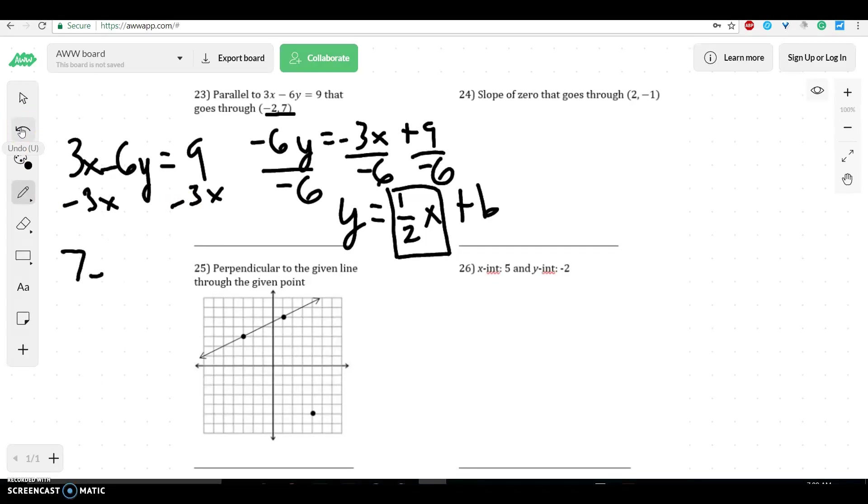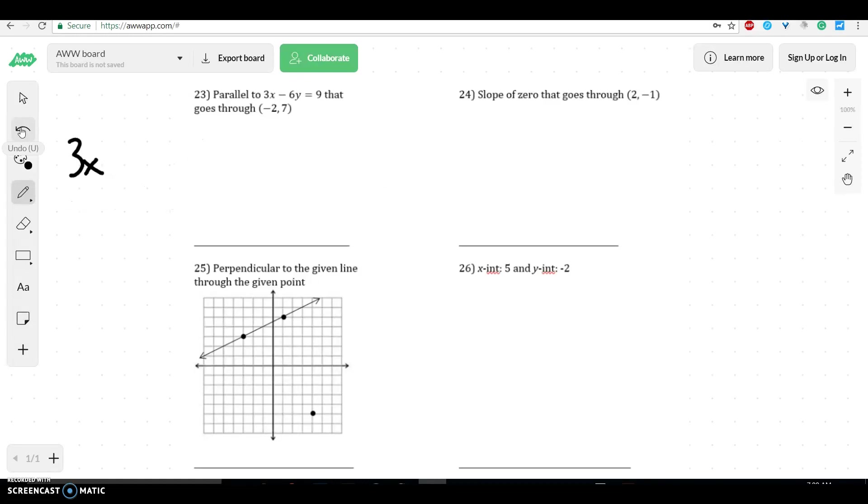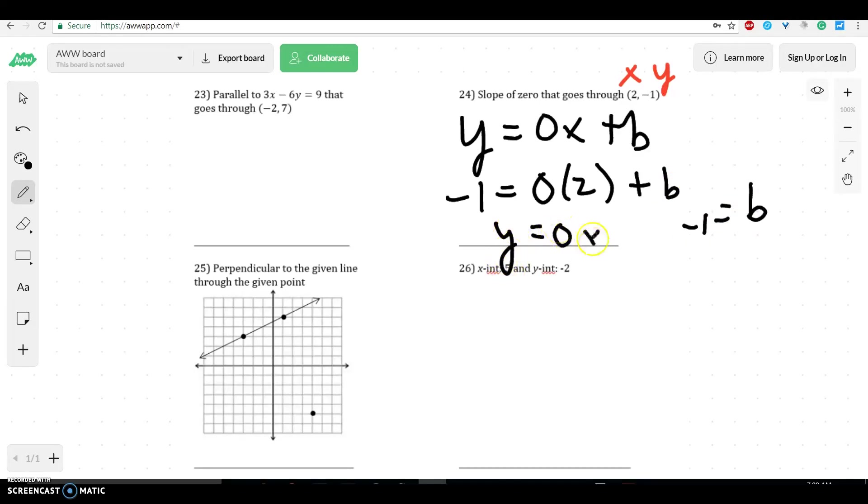On the next one, you can see you have a slope of 0 and a point that goes through (2, negative 1). Well, that makes the problem really easy. And the reason it makes the problem really easy is because you have a slope of 0. So we would just say y equals 0x plus b. Again, we have our point. This is x and this is y. So I just plug those in. Negative 1 equals 0 times 2 plus b, which means b is equal to negative 1. So you have y is equal to 0x minus 1.